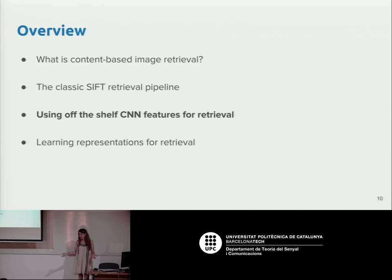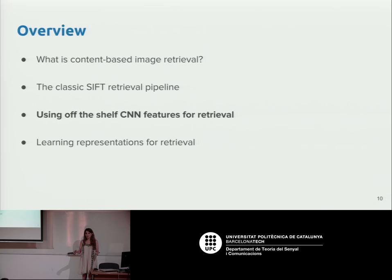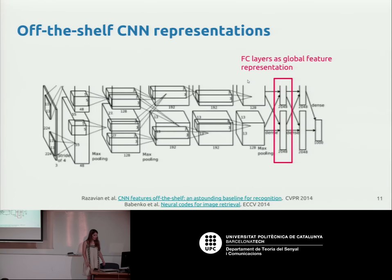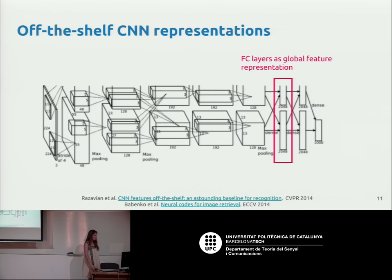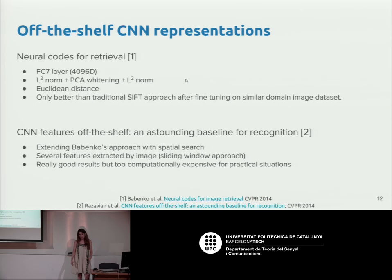Now I'm going to talk about how we do this with deep learning. The first and most logical thing to do is: we have really good networks trained for classification, so let's reuse that for this task. The first approaches took AlexNet architecture trained for classification and used the activations from the fully connected layer to represent each image — in this case a 4096-dimensional vector. That's used to represent both the query and dataset images. It works, though not as well as traditional approaches, but it was surprising that CNN descriptors trained for classification could be used for this task.